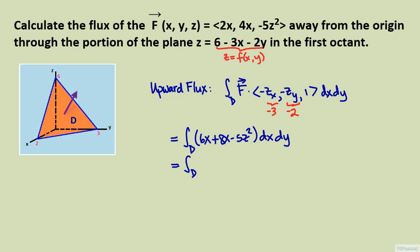Inside the integral, we will combine 6x and 8x. Also, we will have to replace z by what it is in terms of x and y, since we are integrating with respect to x and y. And so the integrand is 14x minus 5 times the square of 6 minus 3x minus 2y.